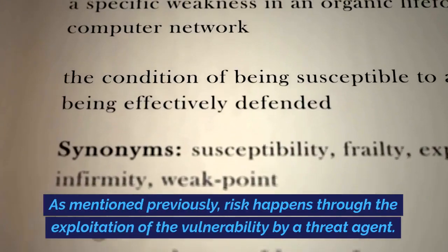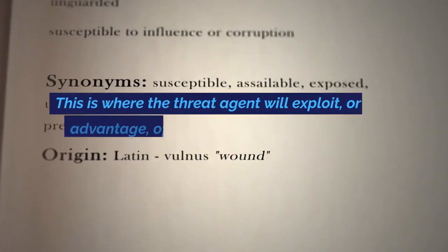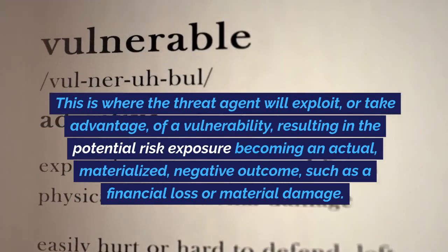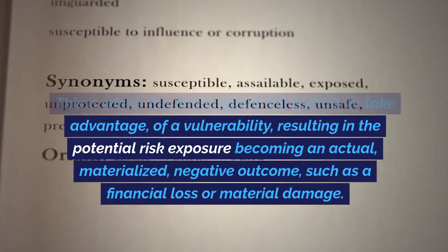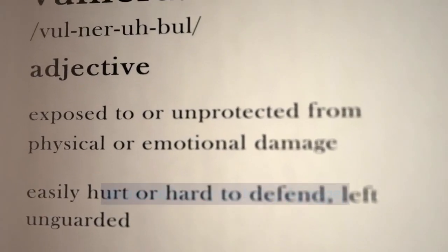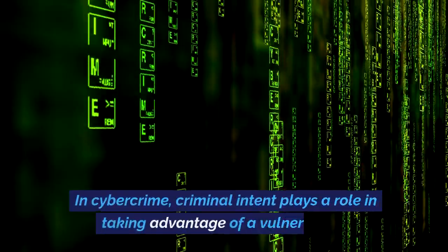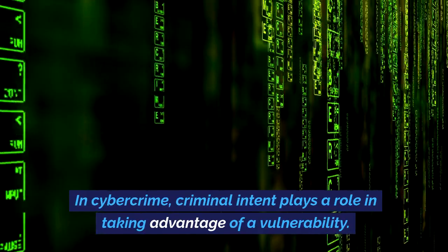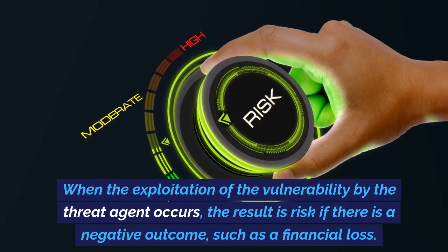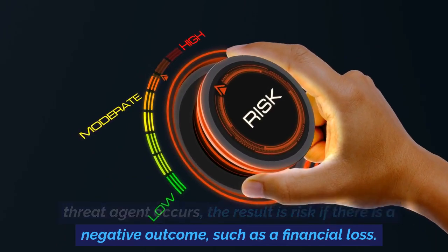Risk happens through the exploitation of a vulnerability by a threat agent. This is where the threat agent will exploit, or take advantage of, a vulnerability, resulting in the potential risk exposure becoming an actual, materialized, negative outcome — such as a financial loss or material damage. Risk is achieved through this process of exploitation where something bad happens. In cybercrime, criminal intent plays a role in taking advantage of a vulnerability. When the exploitation of the vulnerability by the threat agent occurs, the result is risk if there is a negative outcome, such as a financial loss.